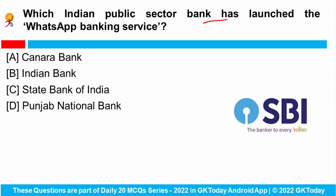Which Indian Public Sector Bank has launched the WhatsApp Banking Service? India's largest public sector lender, State Bank of India, announced that WhatsApp Banking Services is launched. SBI customers can use WhatsApp to access the lender, check their account balance, and receive a mini statement. SBI is using this WhatsApp-based platform to provide customers with banking and credit card related services.